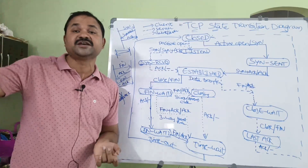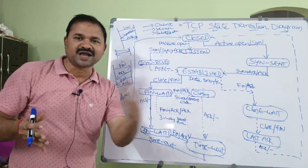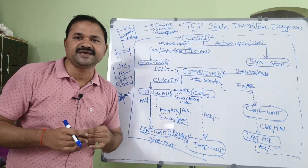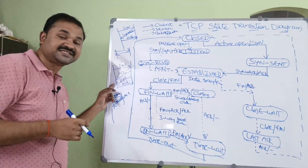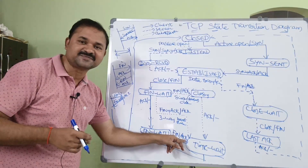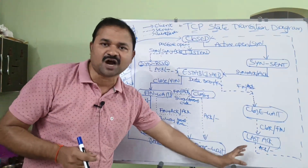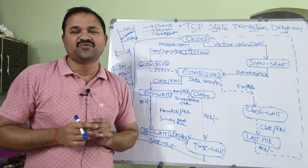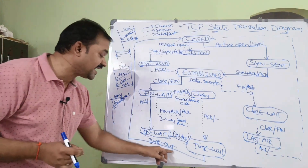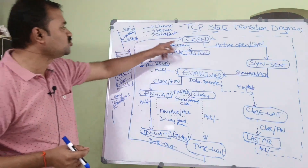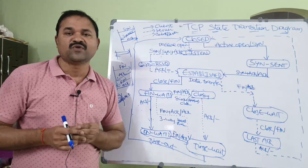In the FIN-wait-2 state, the client waits for the FIN segment from the server, because TCP is full duplex and the connection must be terminated in both directions. The client receives the FIN segment from the server, transmits an acknowledgement, and goes into the time-wait state. Here the connection is not immediately closed; it waits for some time to clear the buffers. Once the timer expires, the client goes into the closed state. This is called active close.